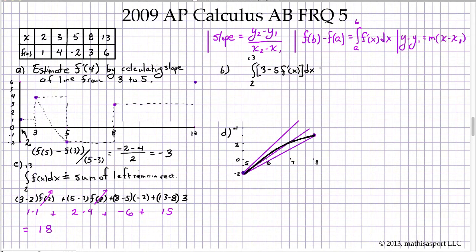We use some properties of integrals. First we use the sum and difference rule for integrals which allows us to separate this into two separate integrals: an integral from 2 to 13 of 3dx minus 5 times an integral from 2 to 13 of f'(x)dx. Notice that I pulled the 5 out front because of the linear property of indefinite integrals.